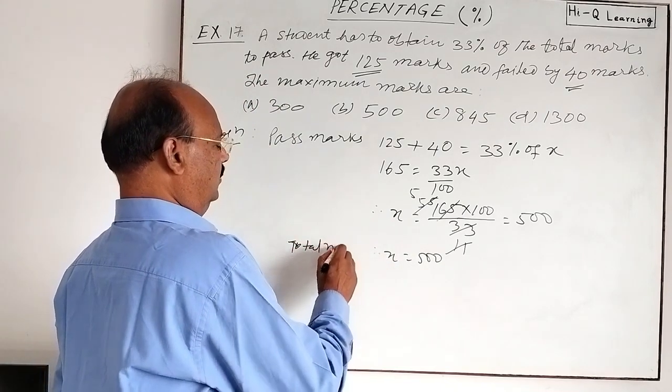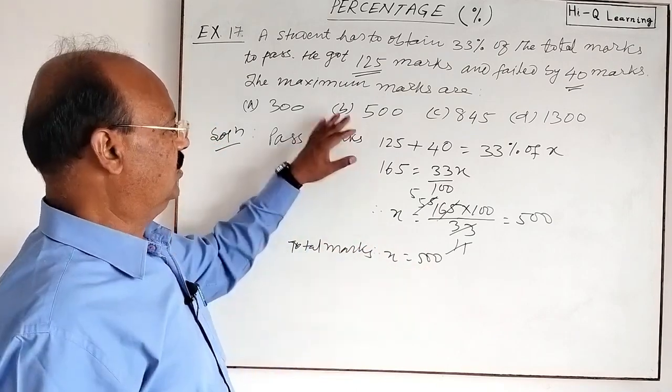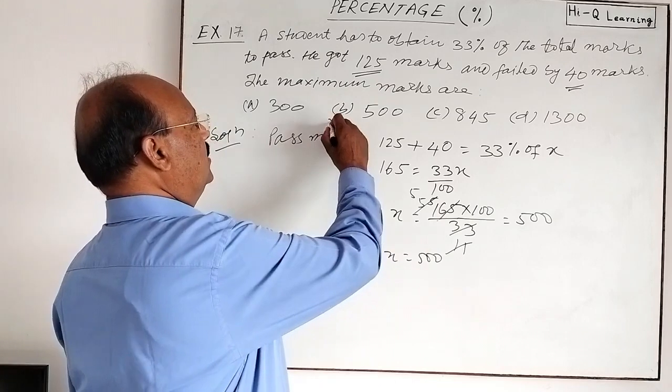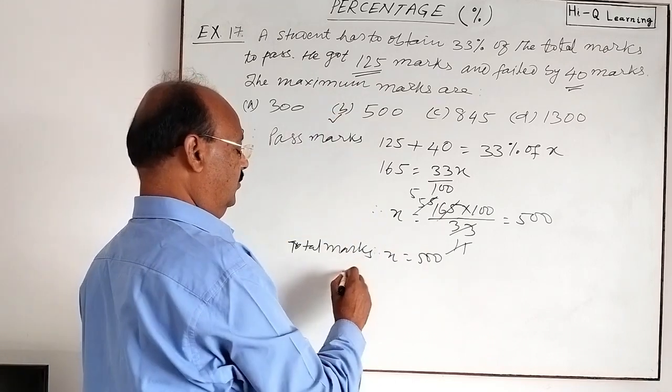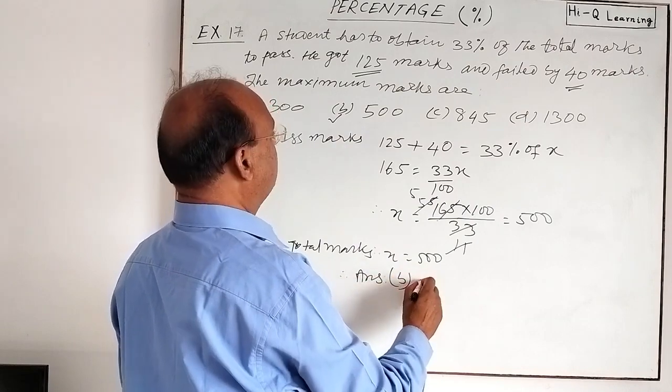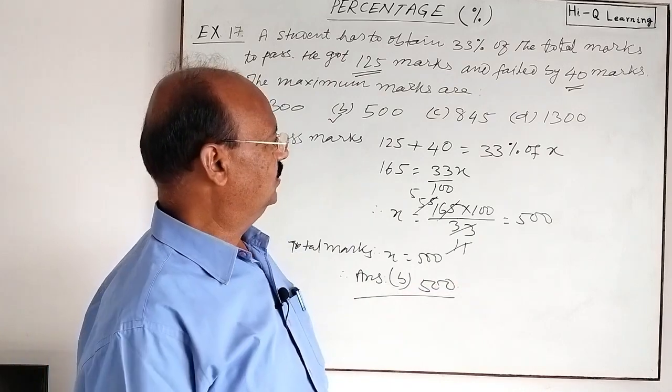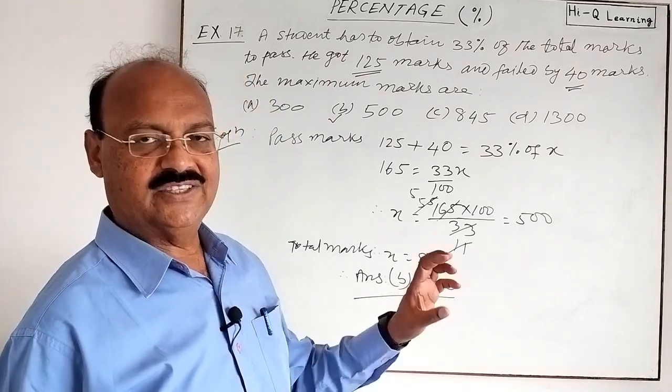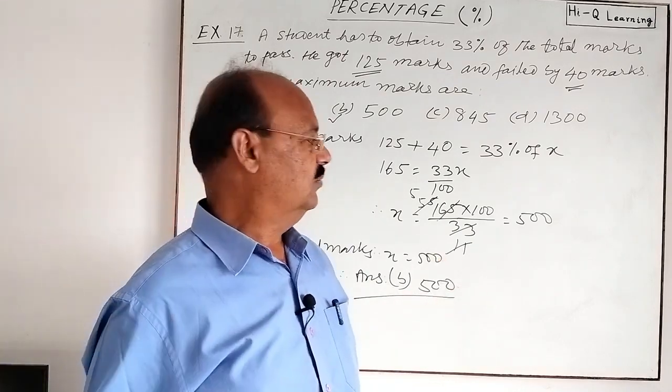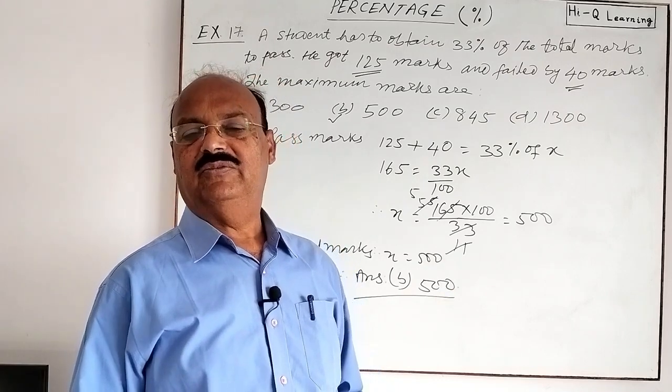Which is required here. Total marks is 500, so which option is correct? Option B is correct here. Therefore your answer is B, which is 500. Very simple, understood it? So but you need some practice to come on about this topic, so please practice some more questions.